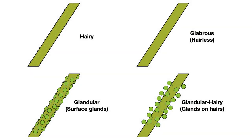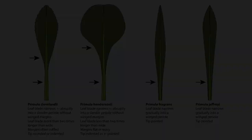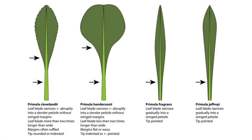Is any part of the plant hairy, or glabrous (hairless)? Is it glandular, with glands on the surface? Or glandular hairy, with glands at the tips of little hairs? What is the length and general shape of the mature leaves? Do they narrow gradually into a winged petiole, or do they narrow more or less abruptly into a slender petiole without winged margins? It's helpful to examine multiple mature plants, as the leaves of young non-flowering plants often do not show mature leaf characters.